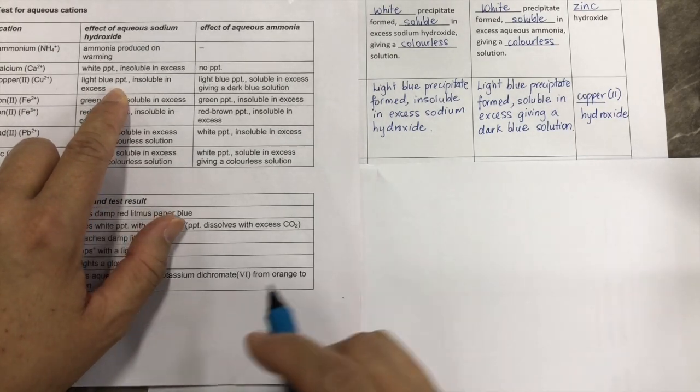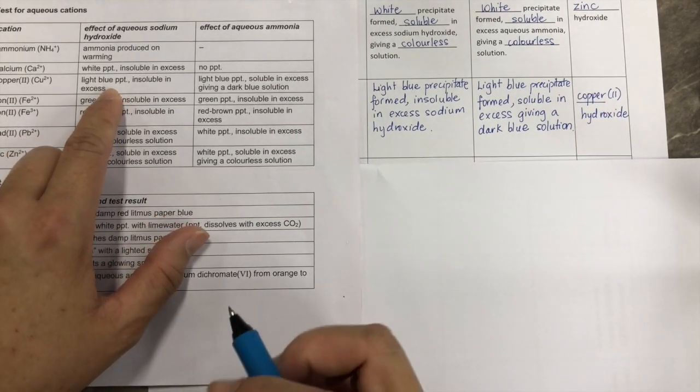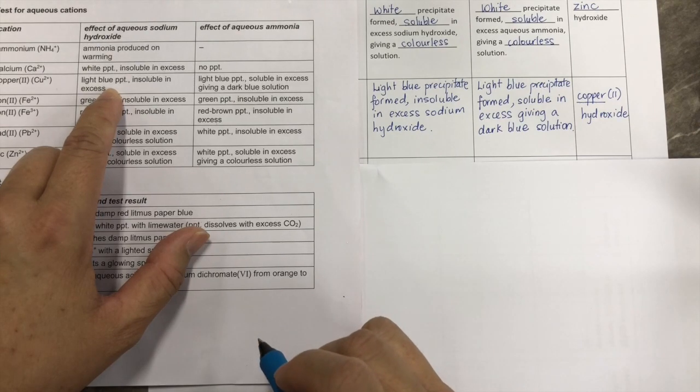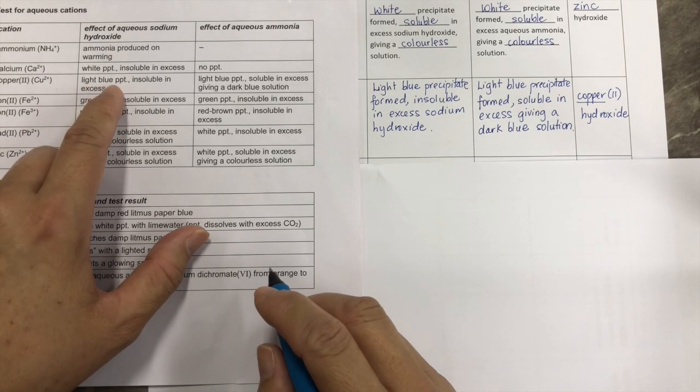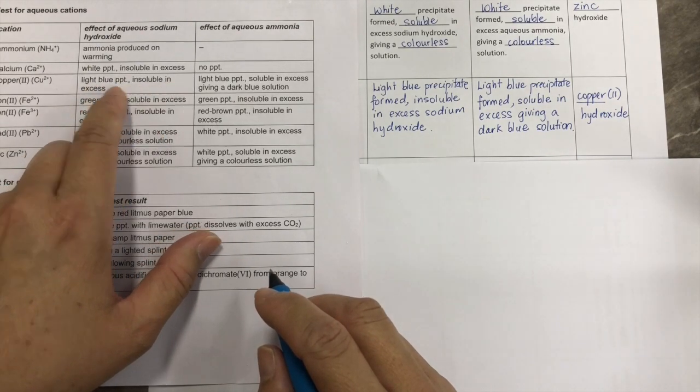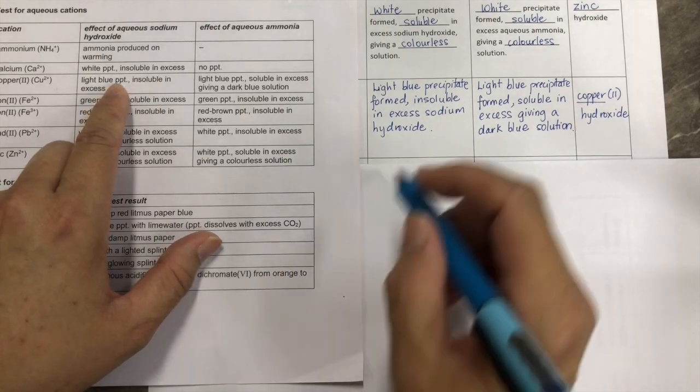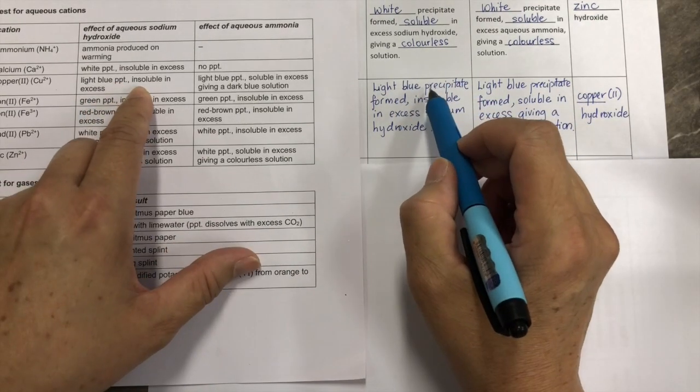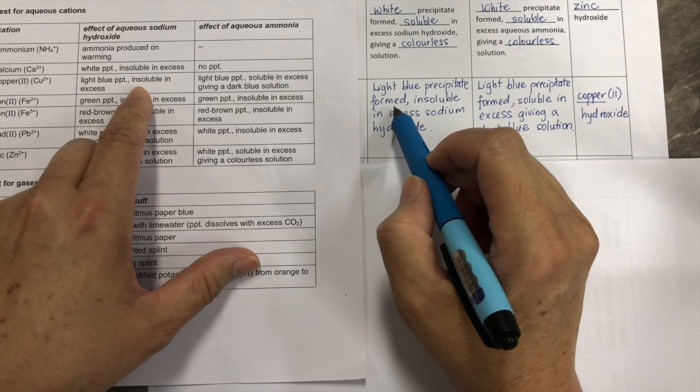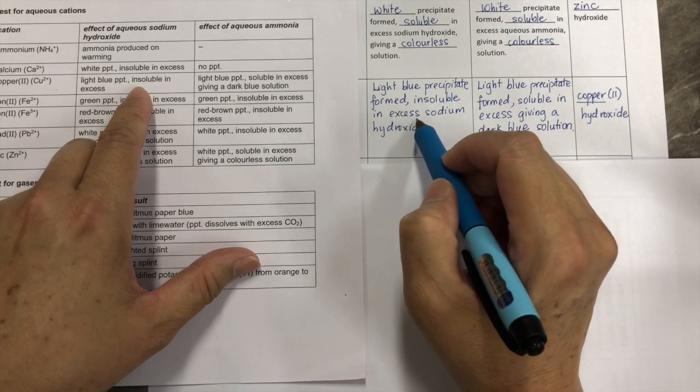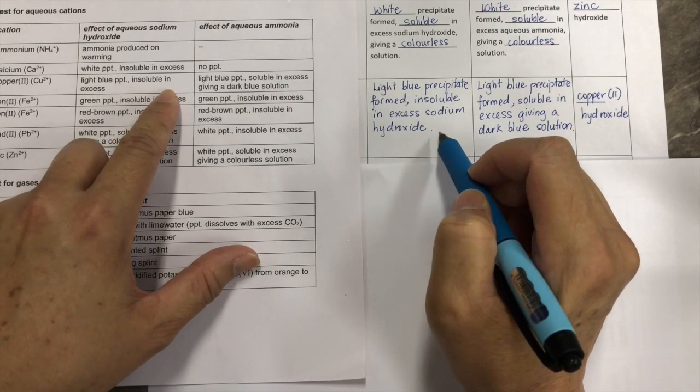See, when cation is reacted with aqueous sodium hydroxide, a light blue precipitate, insoluble in excess. So, you write down, light blue precipitate formed, insoluble in excess sodium hydroxide. Full stop.